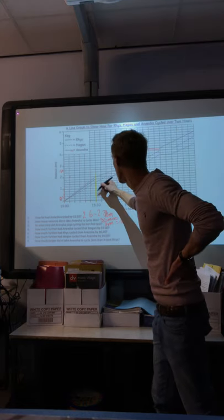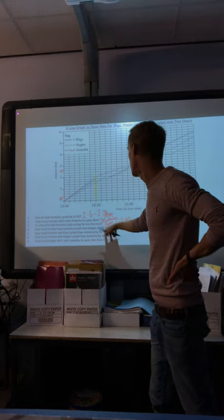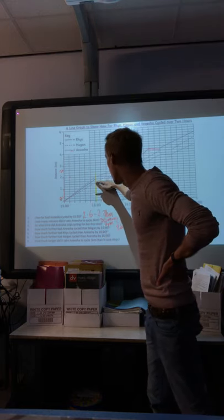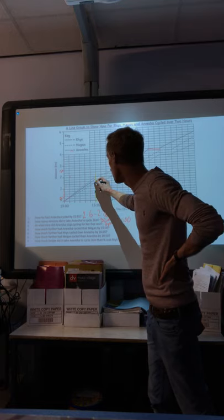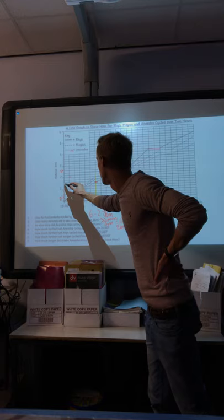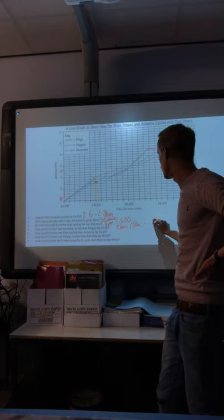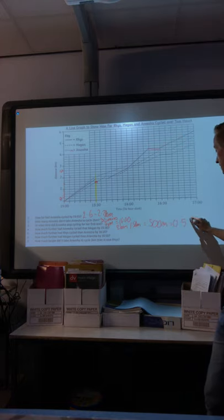So Anisha had cycled 2 kilometres. Megan had cycled, Megan's the dashed line, halfway between. So I would estimate that to be 1.2, 1.4, 1.5 kilometres. So a difference of 500 metres or 0.5 kilometres, whichever or both would be accurate.